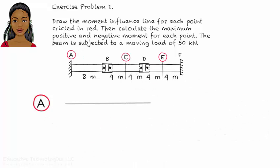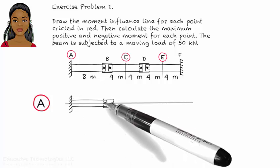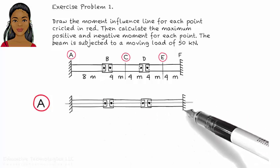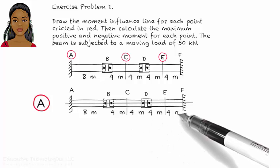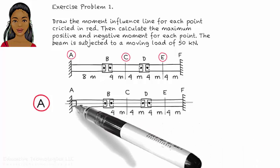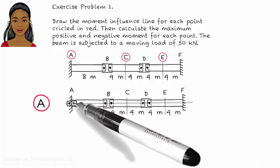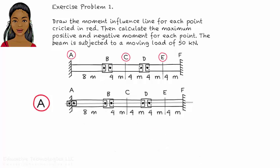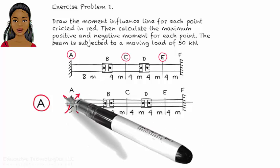Drawing the moment influence line for point A, place a hinge at A. Apply a positive moment to the hinge.